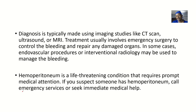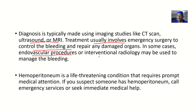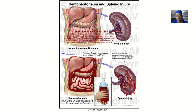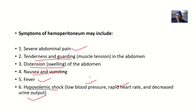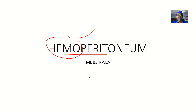For diagnosis, since the blood is inside the body, imaging studies are used — such as CT scan, ultrasound, or MRI scans. Treatment usually involves emergency surgery to control the bleeding and repair any damaged organs. In some cases, endovascular procedures or interventional radiology may be used to manage the bleeding. Hemoperitoneum is a life-threatening condition that requires prompt medical attention, with treatment focused on controlling the underlying cause.